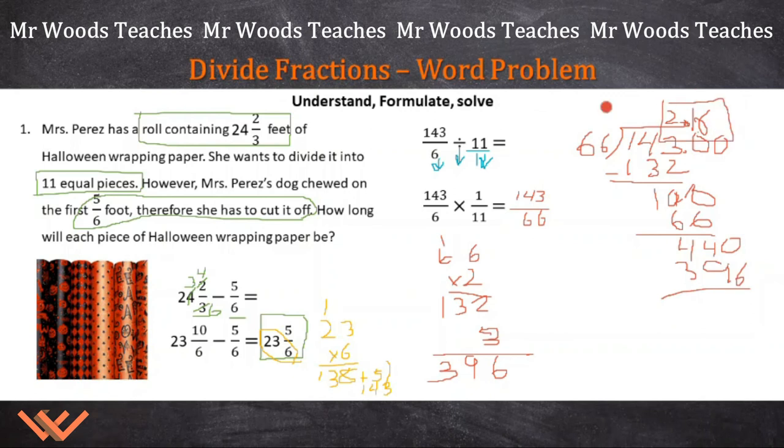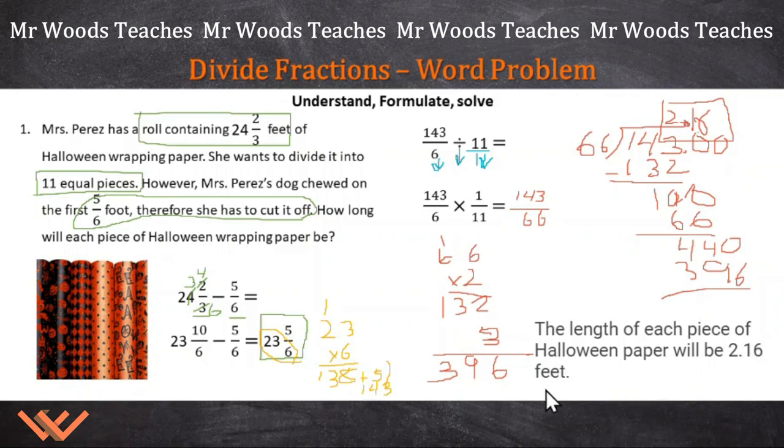Now, what is our answer? We're going to have 2.16 feet for each piece. If it's cut into 11 pieces, you will need to write this out as a complete sentence. This is how I would write it out: The length of each piece of Halloween paper will be 2.16 feet. That's a great way to do it. It's a complete sentence, written properly, and that's what your math teacher is probably going to expect to see from you.